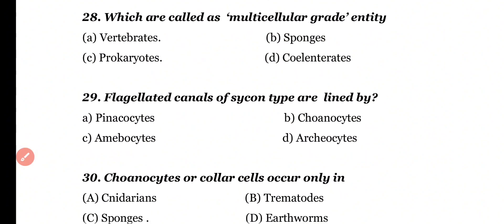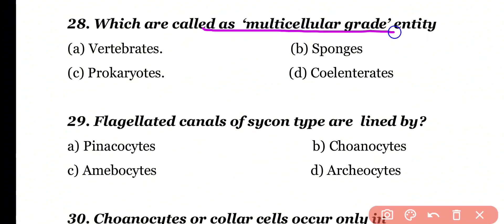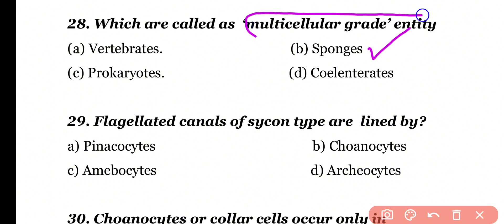Question number 28. What are called multicellular grade entities: vertebrates, sponges, prokaryotes, or cnidarians? Correct answer is option B. As sponges consist of multicellular cells and their body is made up of more than one type of cells, they are known as multicellular grade entities.